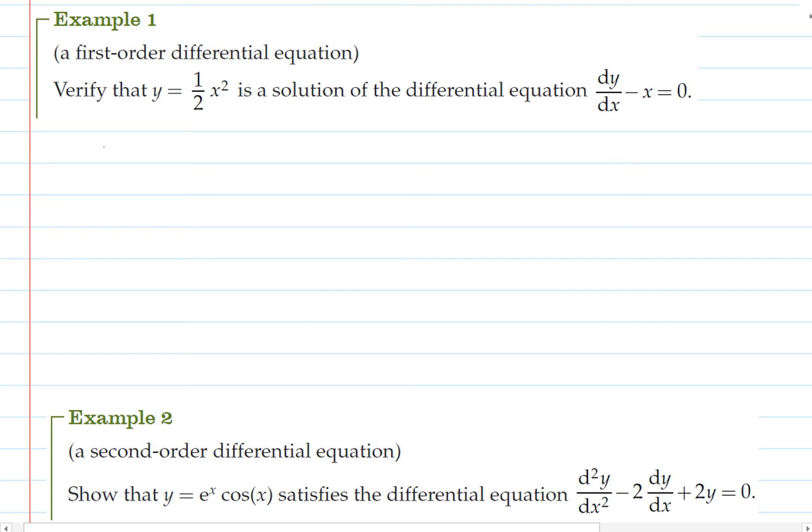So if y equals a half x squared then dy/dx equals x and then our differential equation is dy/dx minus x equals 0. So substituting our value for dy/dx into here we've got x minus x which is 0.